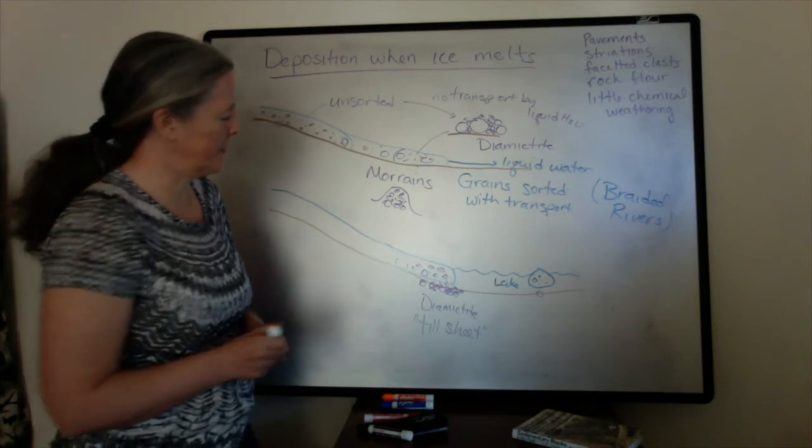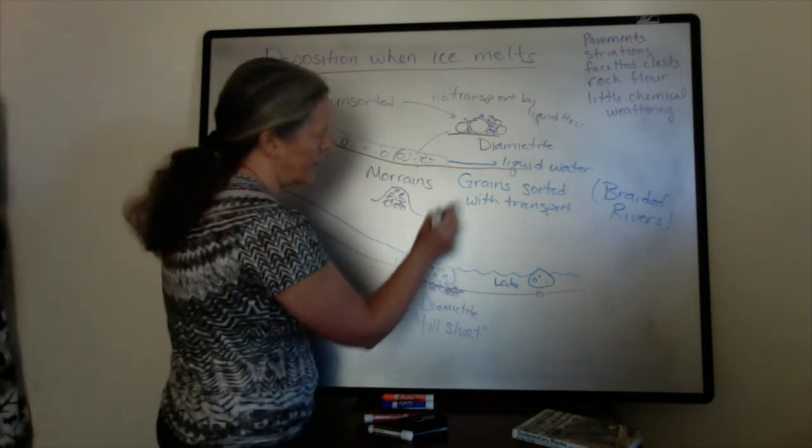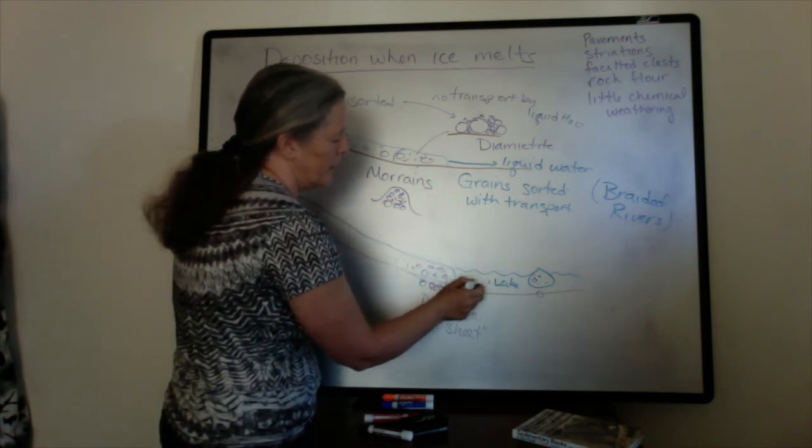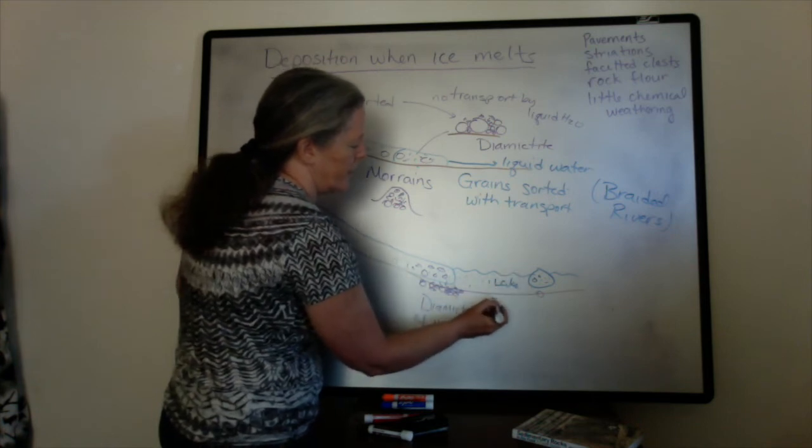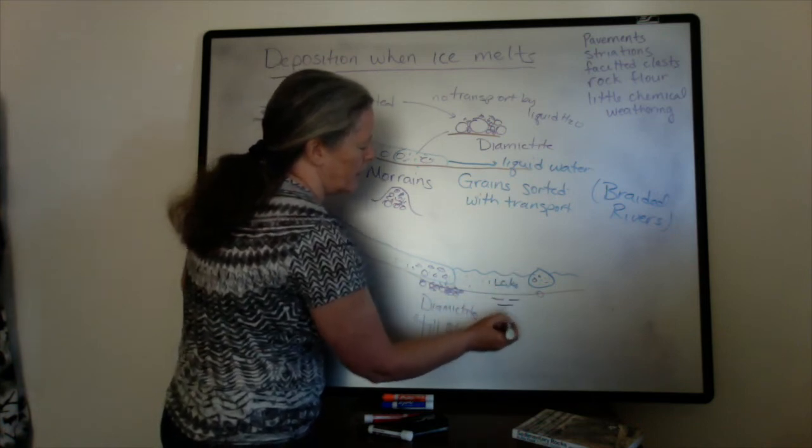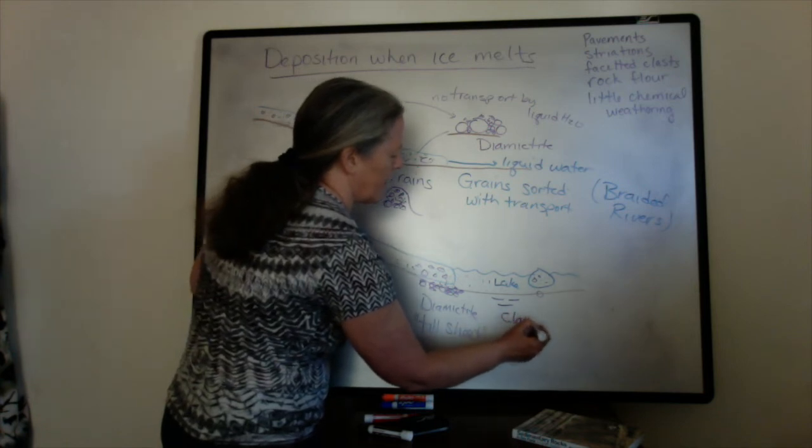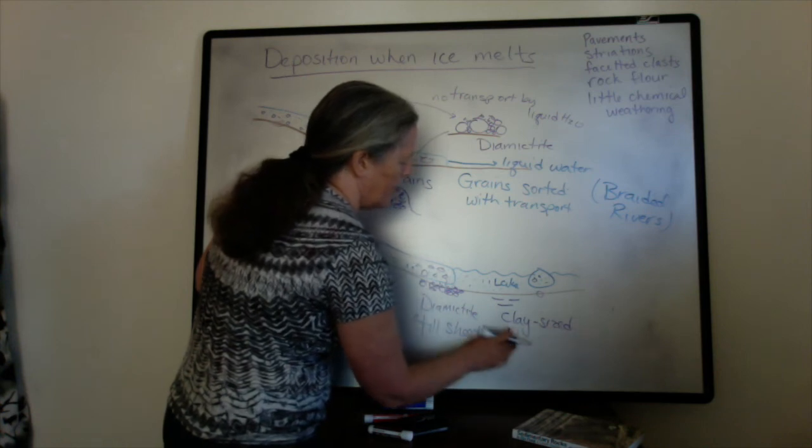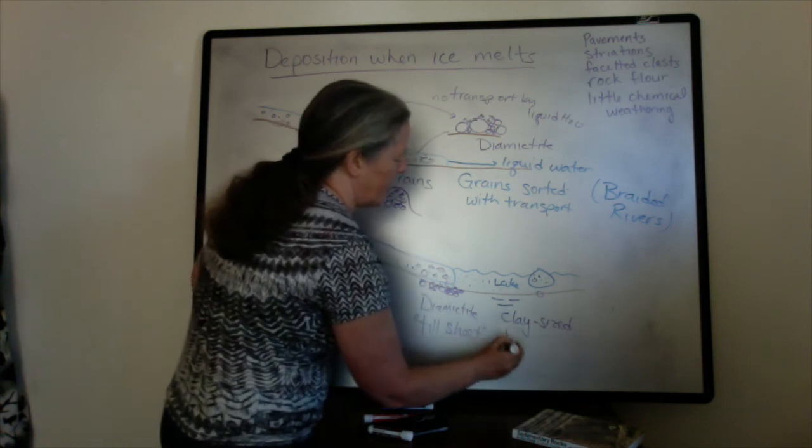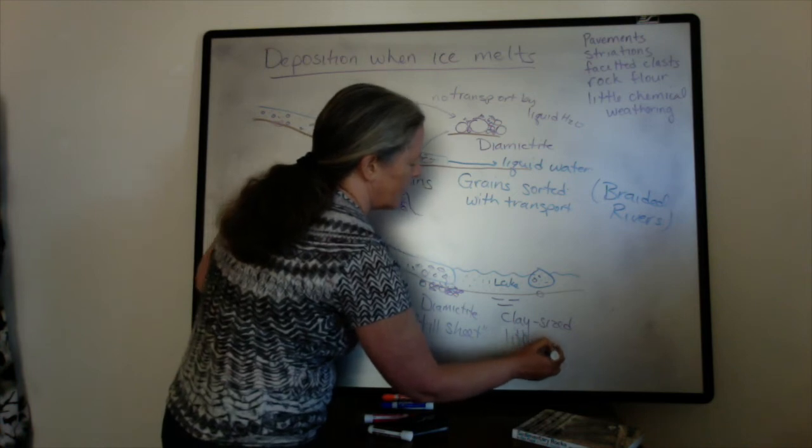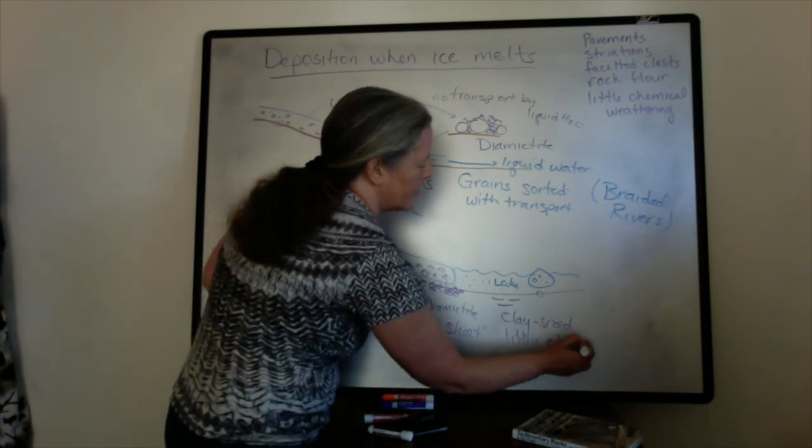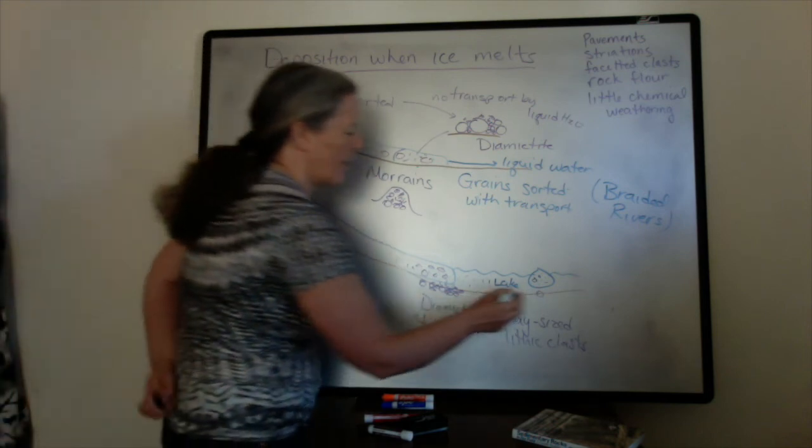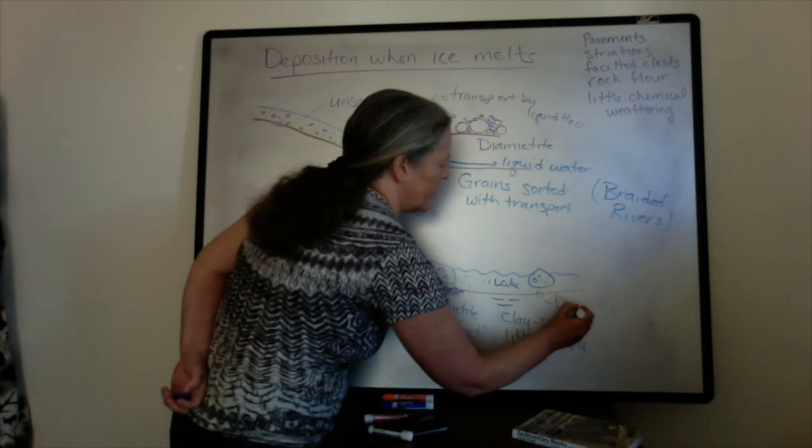So the other thing about these lakes is that the rock flour that's really common stays in suspension, but it also settles out. So you end up with a lot of clay-sized grains, but they're made up of the bedrock. So they're clay-sized lithic clasts as opposed to the clay minerals that form from chemical weathering. And I should label this as a drop stone.